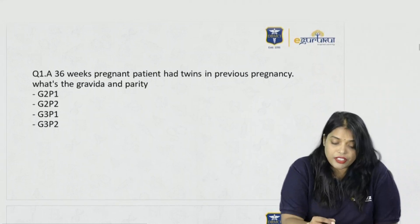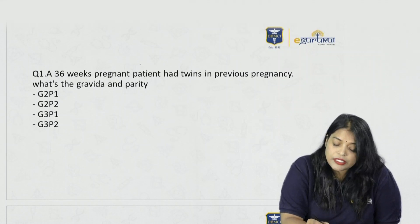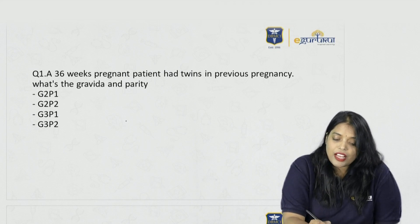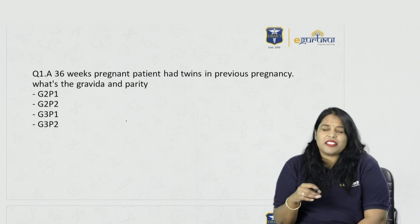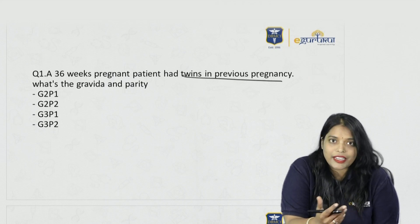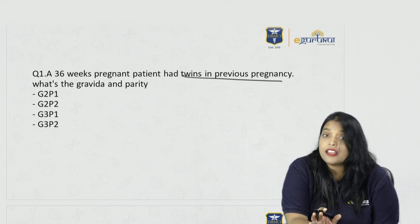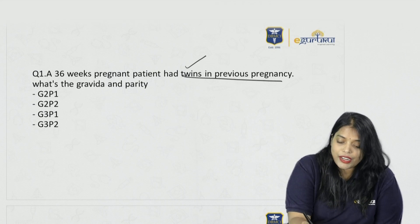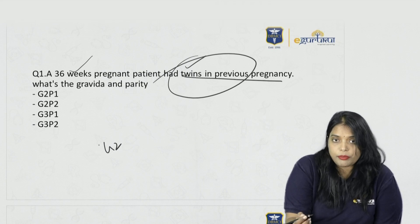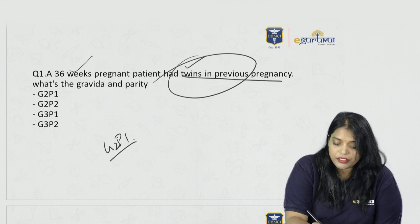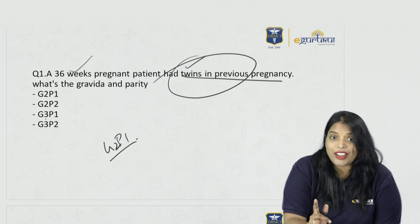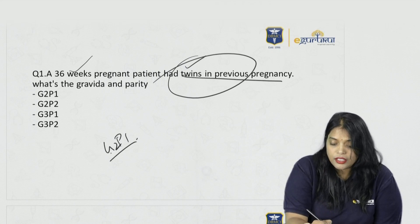Obstetric score has also been asked as a previous year MCQ. A 36-weeks pregnant patient had twins in her previous pregnancy. What is the gravida and parity? Gravida means total number of pregnancies irrespective of outcome. She had twins previously — twins means one pregnancy, not two. The outcome was two babies, but it was nine months of one pregnancy. She had one twin delivery and is now pregnant again, so she is G2. Only the twin pregnancy crossed the period of viability, so she is G2, P1 — not G2P2 or G3.